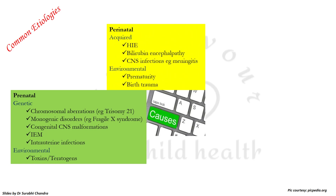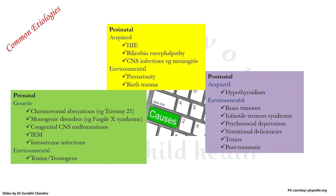Perinatal acquired causes include hypoxic ischemic encephalopathy, bilirubin encephalopathy, and CNS infections such as meningitis. Environmental causes include prematurity and birth trauma. Postnatal acquired causes include hypothyroidism, brain tumors, infantile tremor syndrome, psychosocial deprivation, nutritional deficiencies, toxins, and post-traumatic causes.